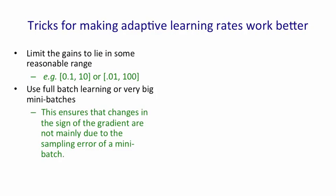The adaptive learning rates was designed for full batch learning. You can also apply it with mini-batches, but they better be pretty big mini-batches. That will ensure that the change in signs of gradients aren't due to the sampling error of mini-batches. They really are due to going to the other side of a ravine.